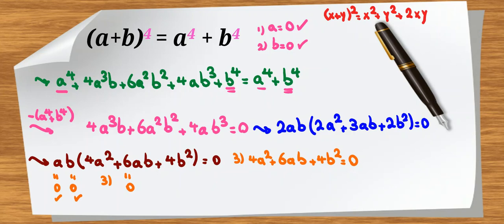We have 6ab. I can write for 4a squared. I consider 3a squared. Then I consider 6ab. Then I consider 3b squared. But because we have 4a squared, I should add a squared and also b squared equal to 0.